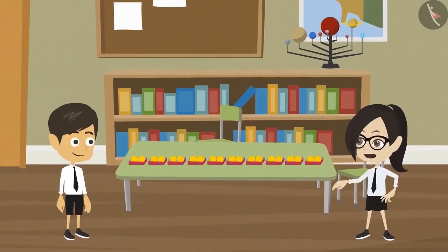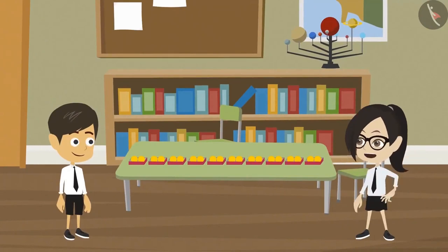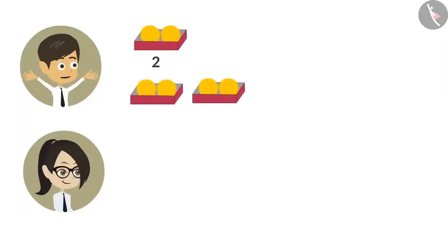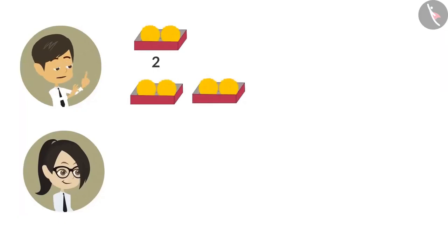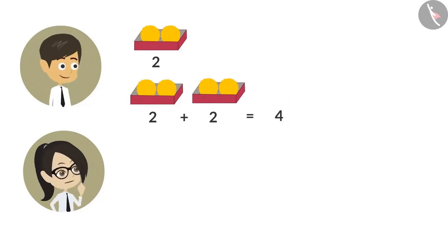Now look, there are ten boxes. Each box has two ladoos. So let's count the ladoos in the boxes. Each box has two ladoos. To know the ladoos in two boxes, we have to add two, two times. So the answer is four. Which means there are four ladoos in two boxes.